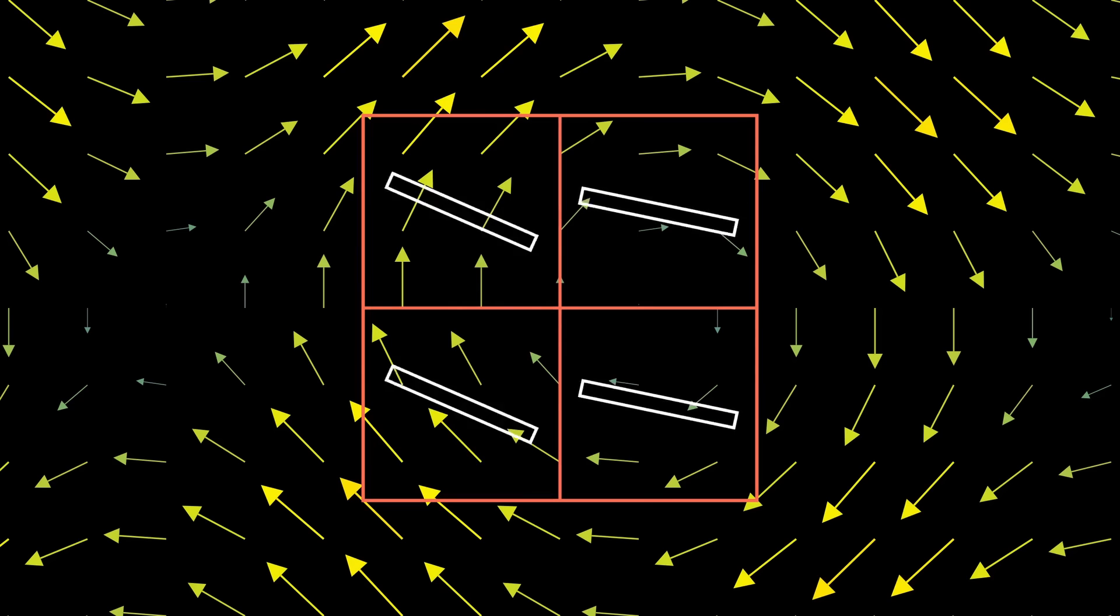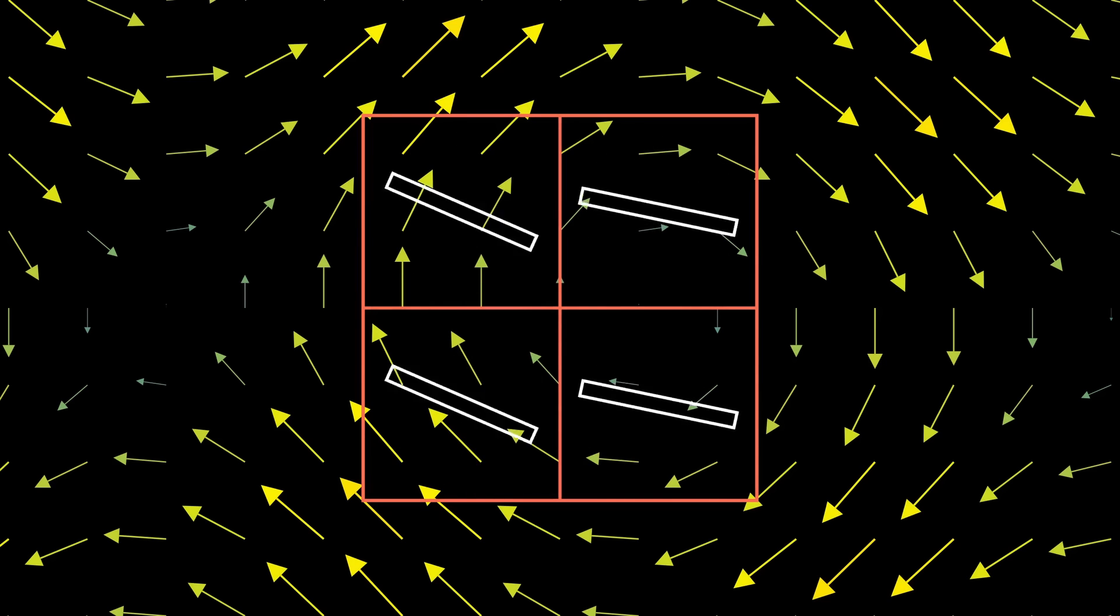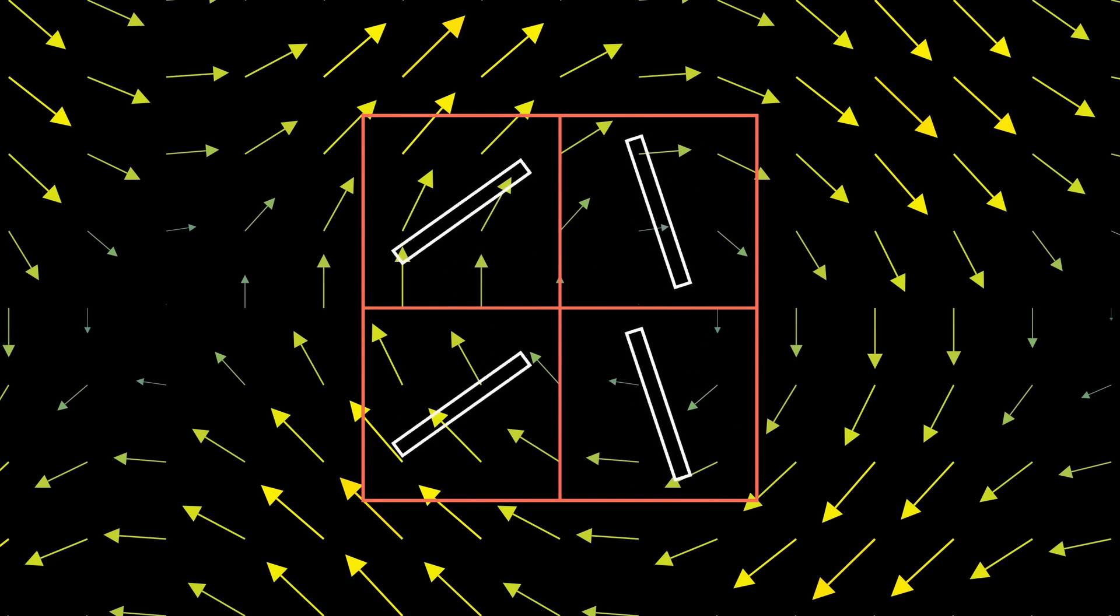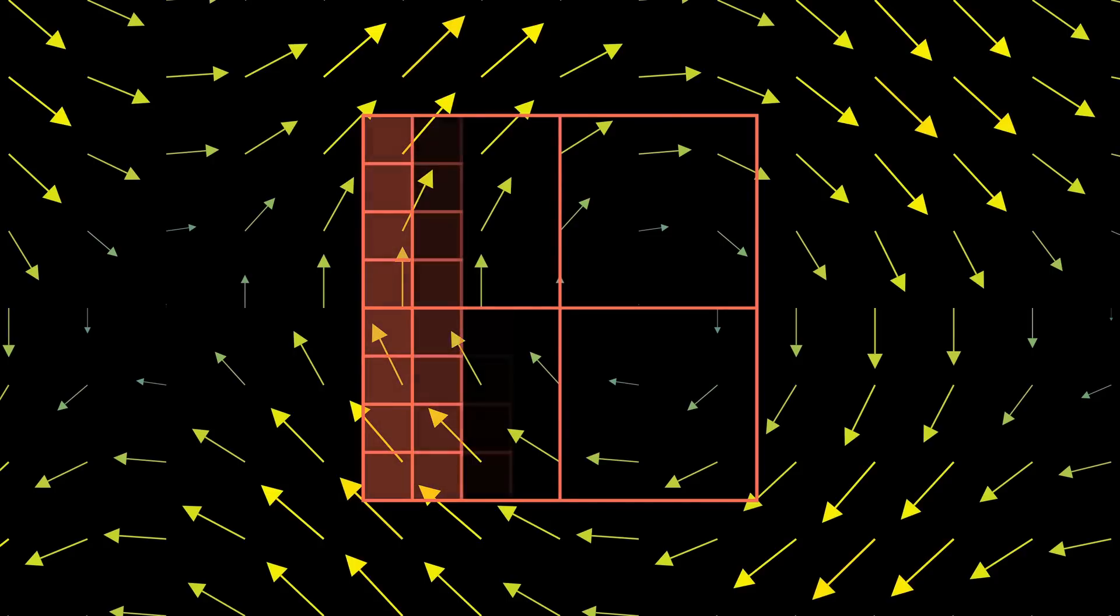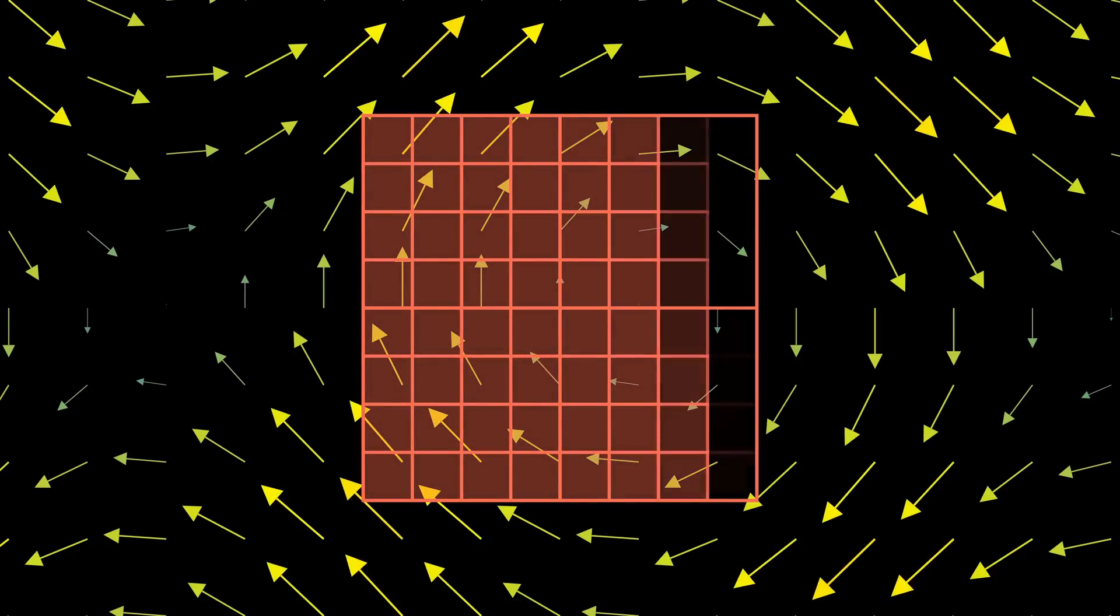Well, the most intuitive way to do it is to section off little tiny pieces of this large area and put a little stick in each one. As the amount of pieces goes to infinity, their area goes to zero, and they essentially become points. And then, we can just measure the curl at each point.